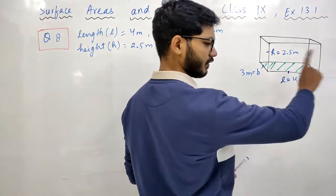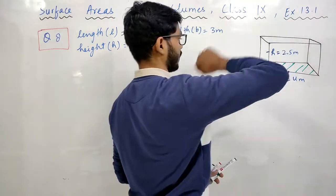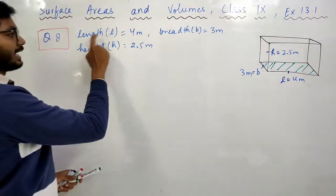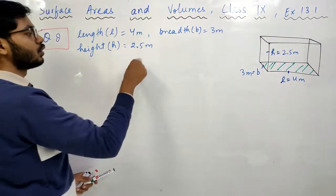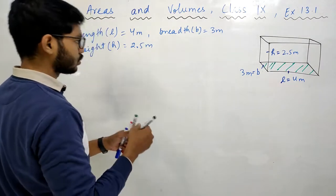This means you need to cover four sides and the top. The length given is 4 meters, breadth is 3 meters, and height is 2.5 meters.